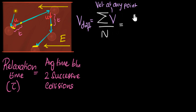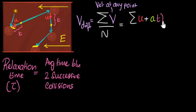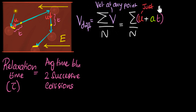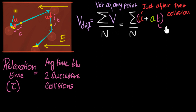In general, the drift velocity is a summation of (u + at) divided by n. We need to be careful: u is the velocity just after the previous collision, and t is the time elapsed since the previous collision.